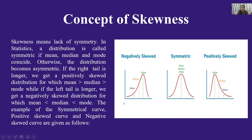जब right tail longer होती है — यह tail छोटी है और यह वाली tail लंबी है — तो if the right tail is longer, we get a positively skewed distribution। जब दाहिनी tail लंबी हो जाती है, तब आप इसको positively skewed कहते हैं। उसी तरह से जब left tail लंबी हो जाती है, तो आप इसको negatively skewed कहते हैं। यह सिर्फ नाम-करण है, आपको याद रखना है।